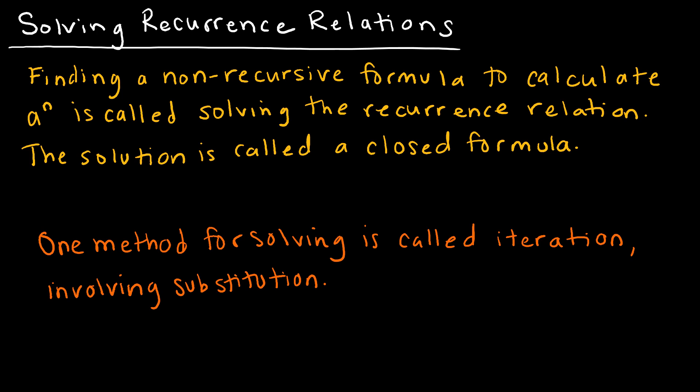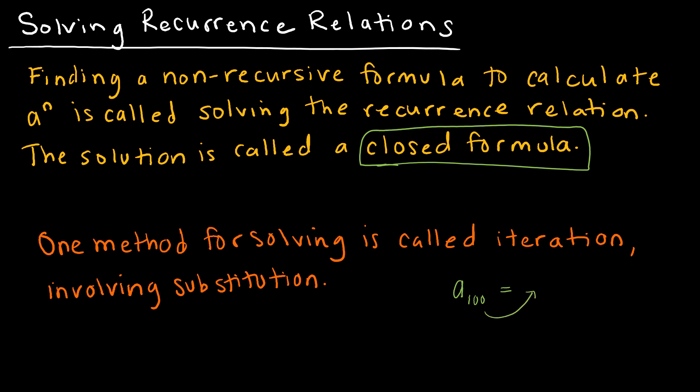As I said before, recurrence relations are great, but they're not so great if I asked you to find a of 100, because that means I would have to find all of the values up to that point. So if possible, we would like to solve the recurrence relation into a closed formula — a formula where we can take that 100 and plug it in somewhere and find the solution. We're basically trying to write a function of n.